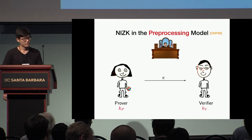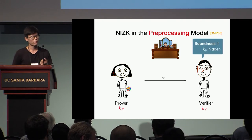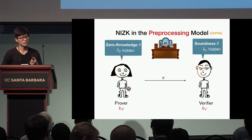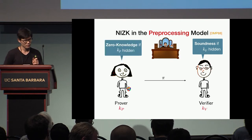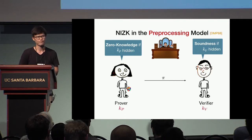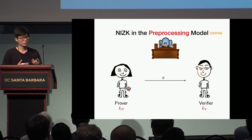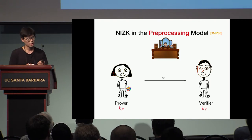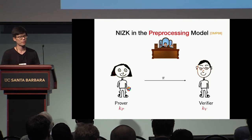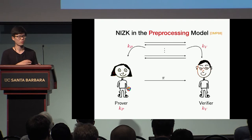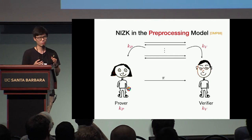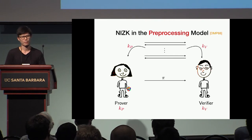In this model, soundness is achieved assuming that the verifying key is hidden from the prover, and analogously, the zero-knowledge property is achieved assuming that the proving key is hidden from the verifier. To implement NIZK in the pre-processing model, we would generally replace the trusted authority with some interactive protocol between the prover and the verifier to generate the proving and verifying keys. This is called the setup phase or pre-processing phase — hence the name the pre-processing model.